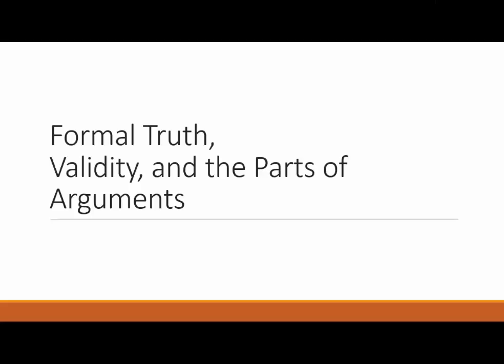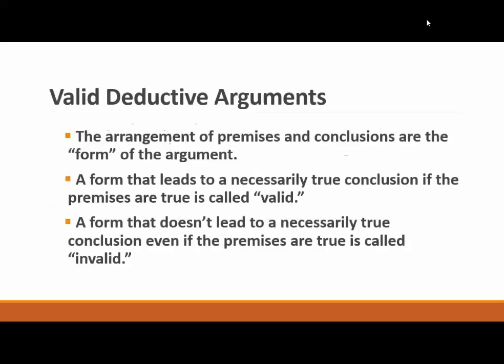This video will discuss the concepts of formal truth, validity, and the parts of arguments. The arrangement of premises and conclusions are the form of the argument. A form that leads to a necessarily true conclusion if the premises are true is called a valid argument. A form that doesn't lead to a necessarily true conclusion even if the premises are true is called an invalid argument.